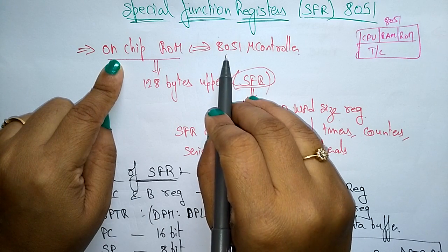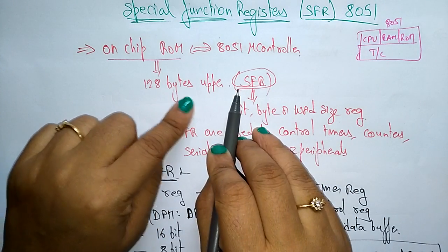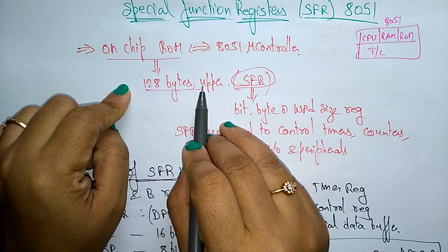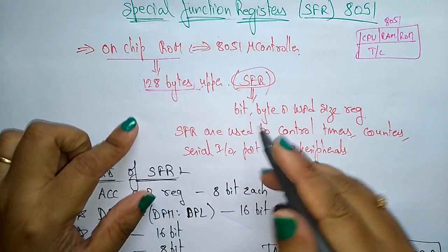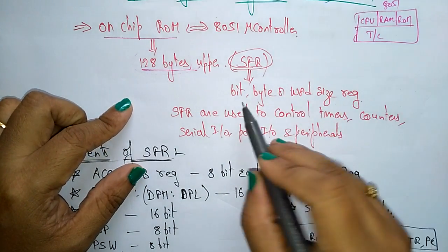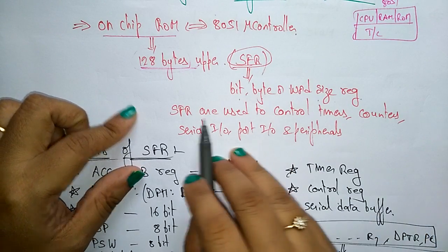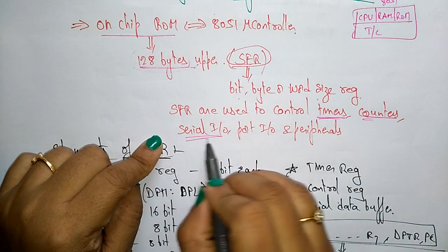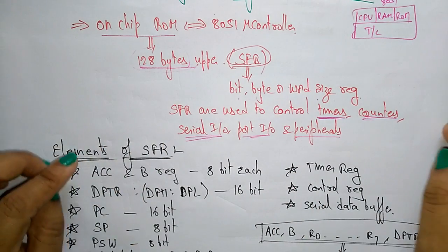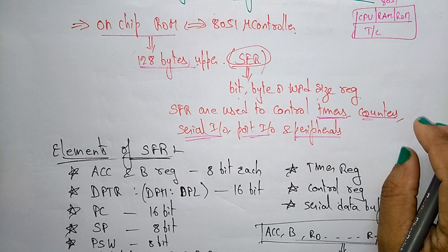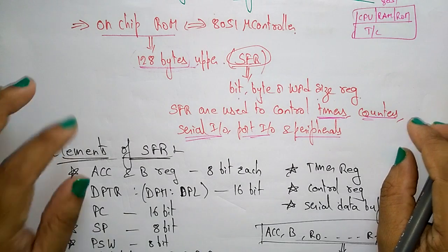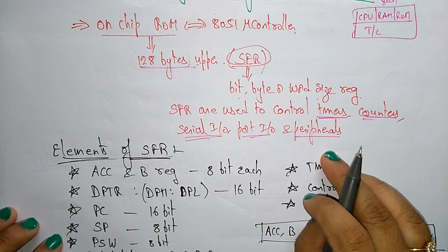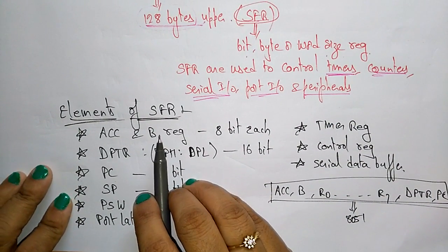The 8051 microcontroller consists of 128 bytes of upper special function register space. The special function registers are stored in these upper 128 bytes and may be bit-size, byte-size, or word-size registers. They are used to control timers, counters, serial input/output ports, and peripherals.